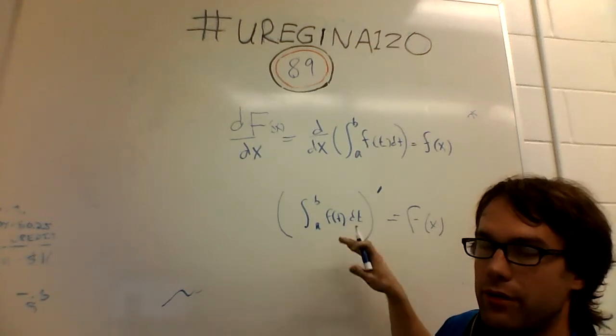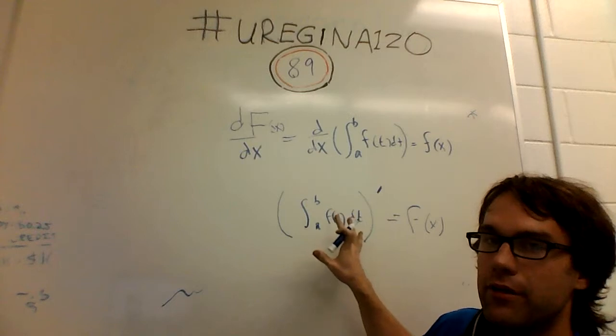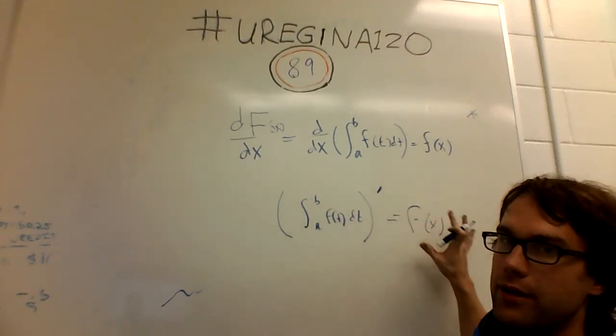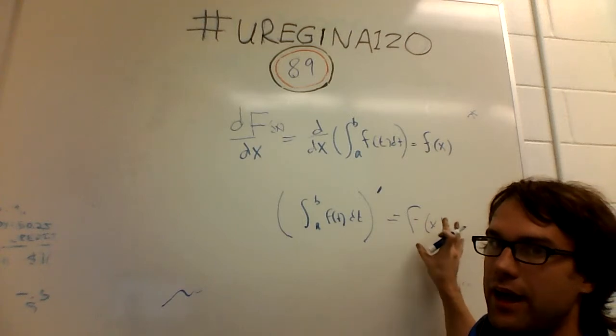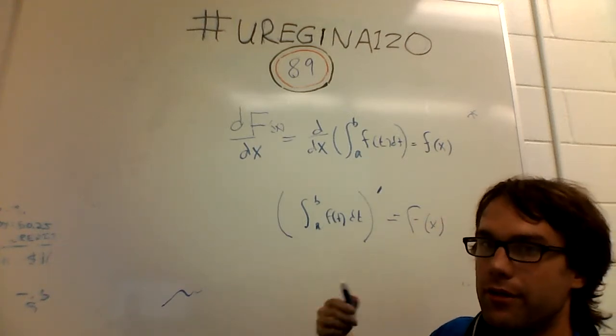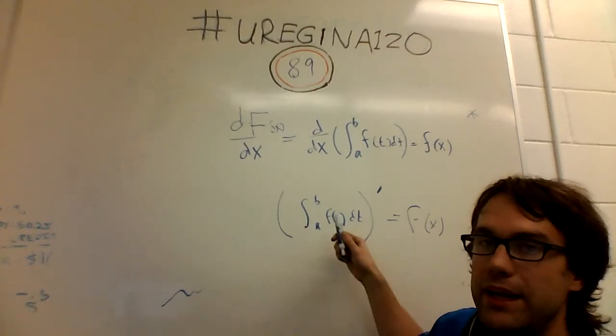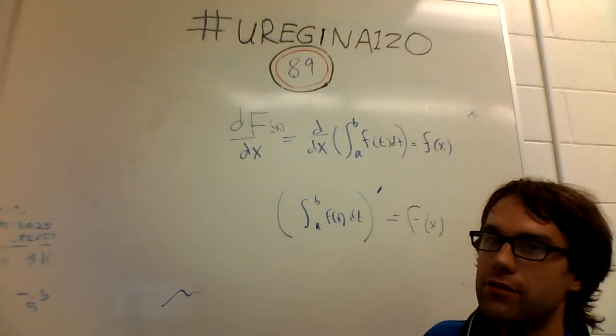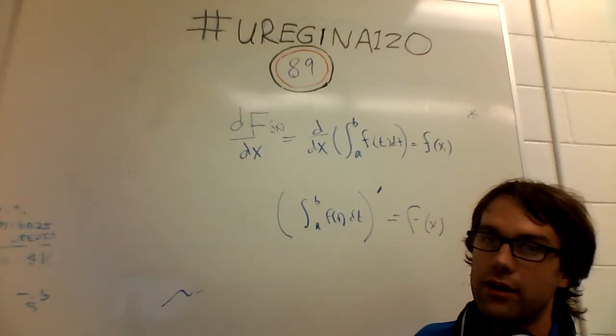So this definite integral f of t, or this integral of f, is integrating f and then taking the derivative results again in this function f. As long as, again, on the, between a and b, on the domain of f, that the function f is differentiable, continuous, and exists.